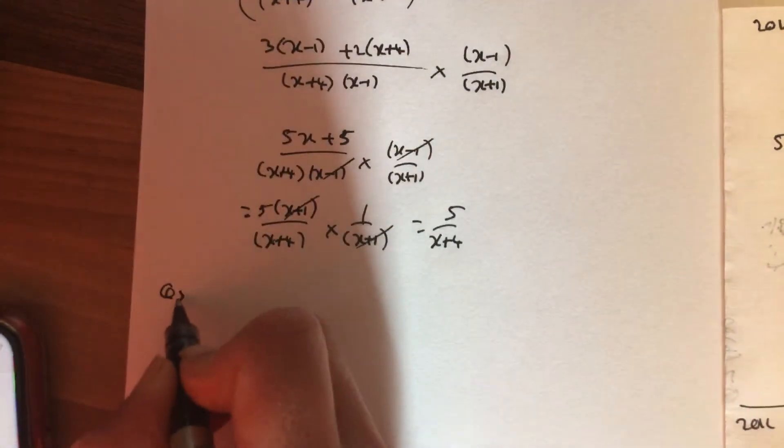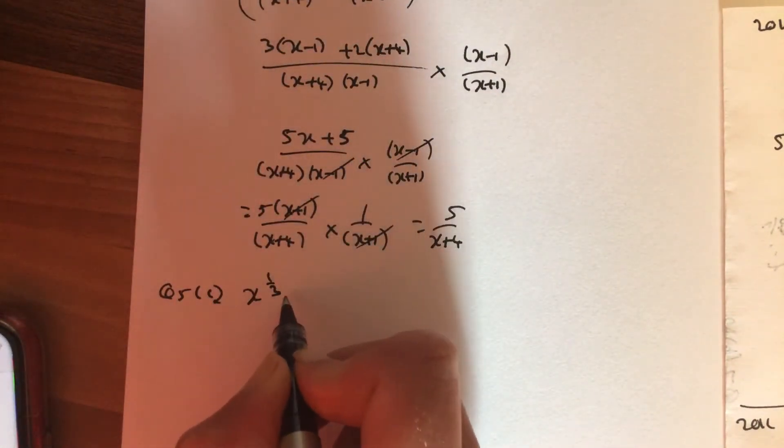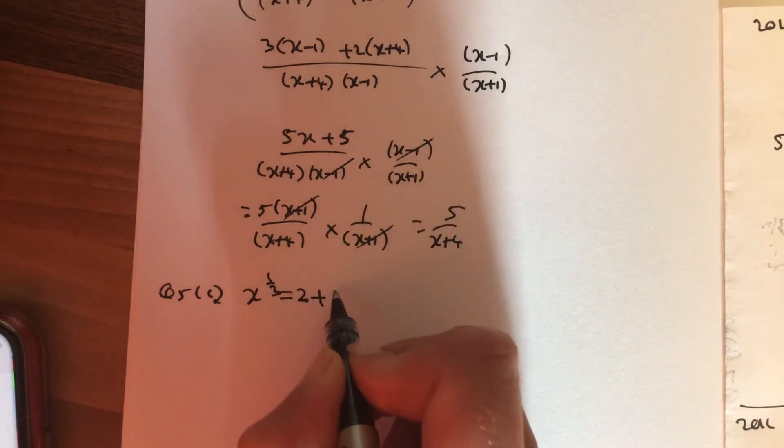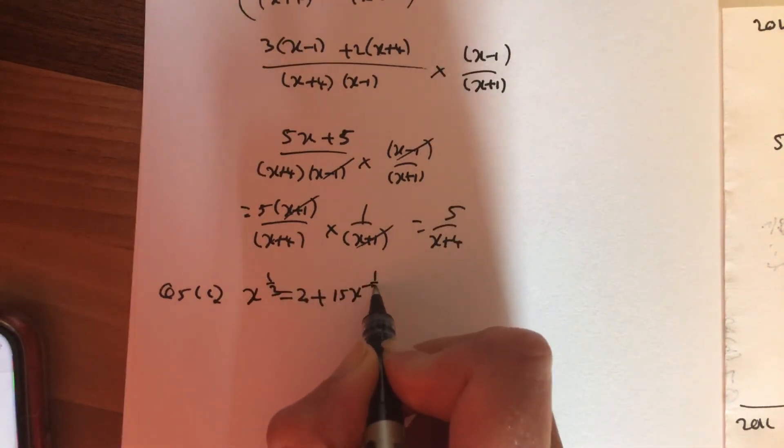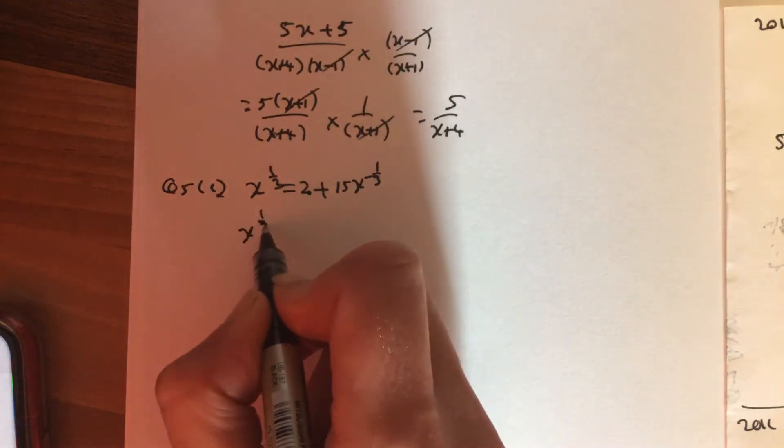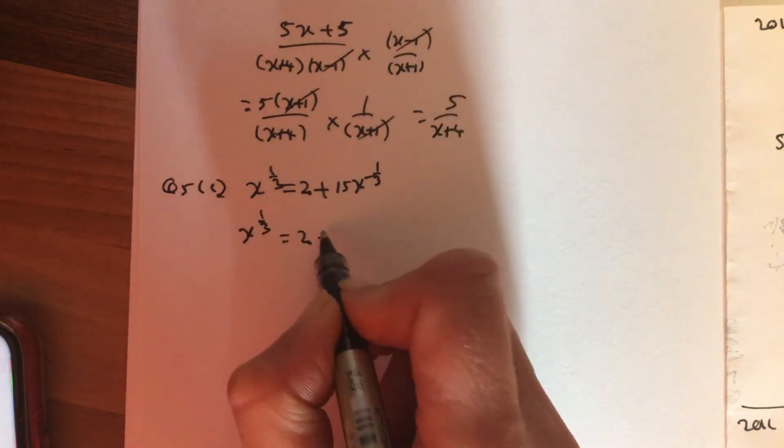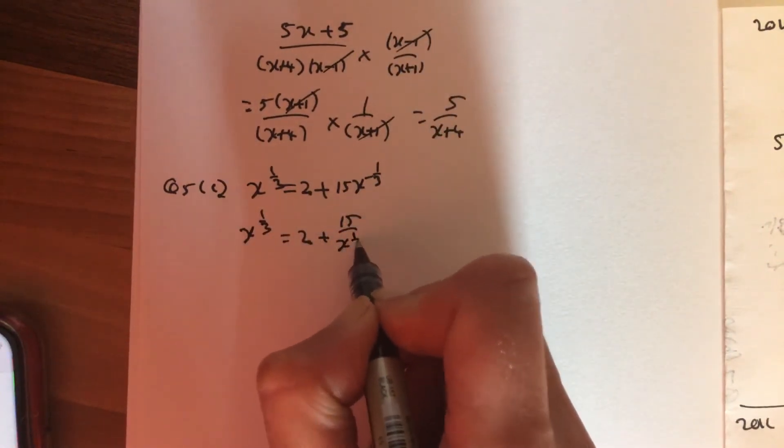So question 5c. You've got x to the one-third equals 2 plus 15x to the minus one-third. I'm just going to write that slightly differently: x to the one-third equals 2 plus 15 over x to the one-third.